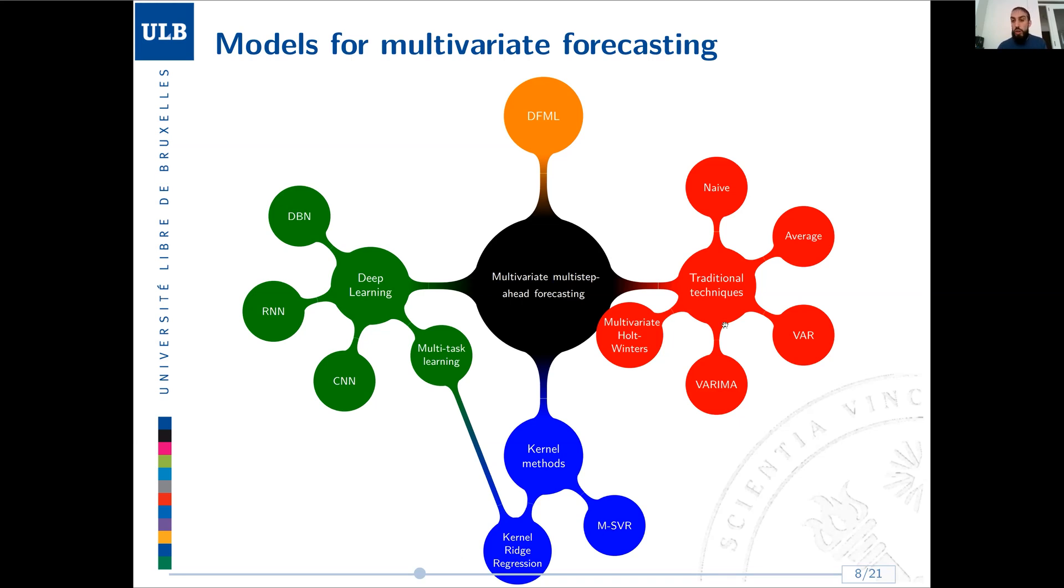Before speaking about that, I will first introduce the landscape of forecasting models for multivariate and multi-step ahead forecasting. On one end, we have the red group, some traditional techniques like naive, average forecasting, traditional benchmarks like Holt-Winters but in the multivariate version, vector autoregressive. So the family of statistical techniques. On the other end, we have more deep learning based techniques like deep belief network, recurrent neural networks like LSTM, like GRU, convolutional neural networks CNN, and some particular combination of neural networks for multi-task learning. A third category is kernel methods, like support vector regression for multivariate case and kernel regression.